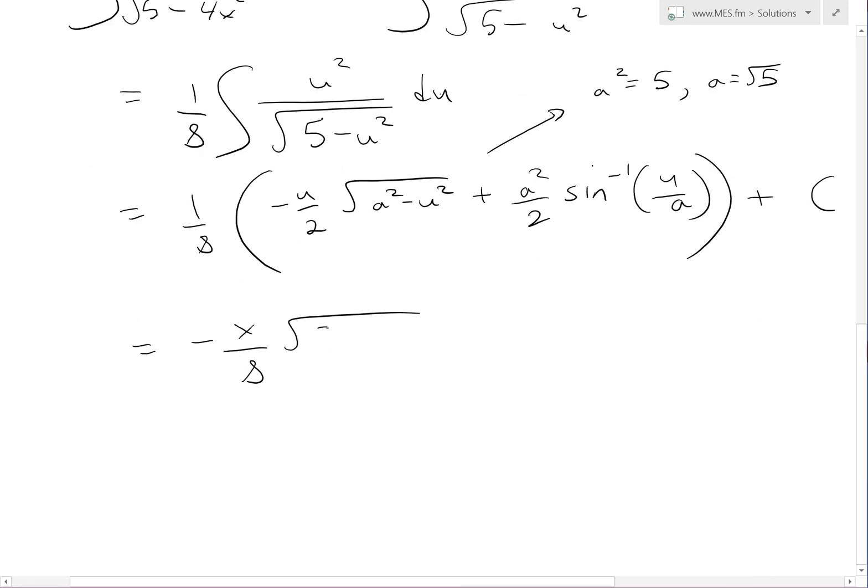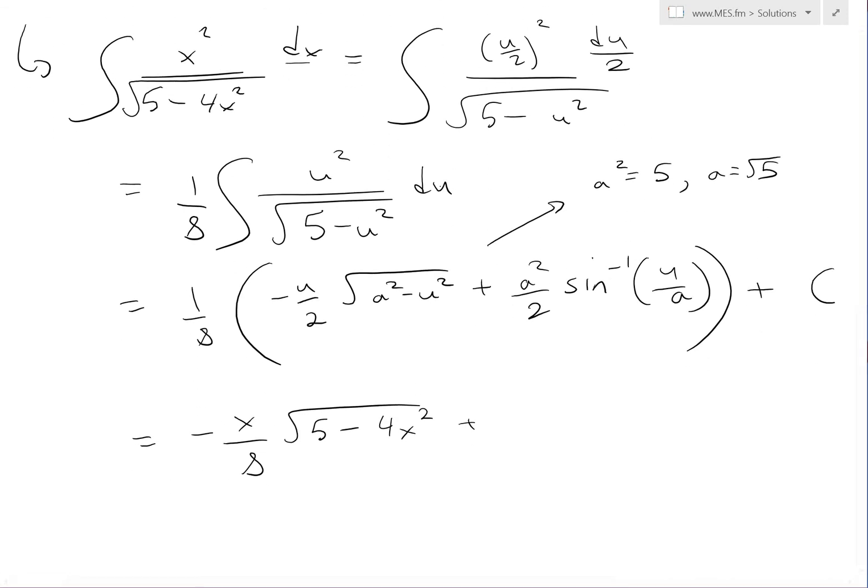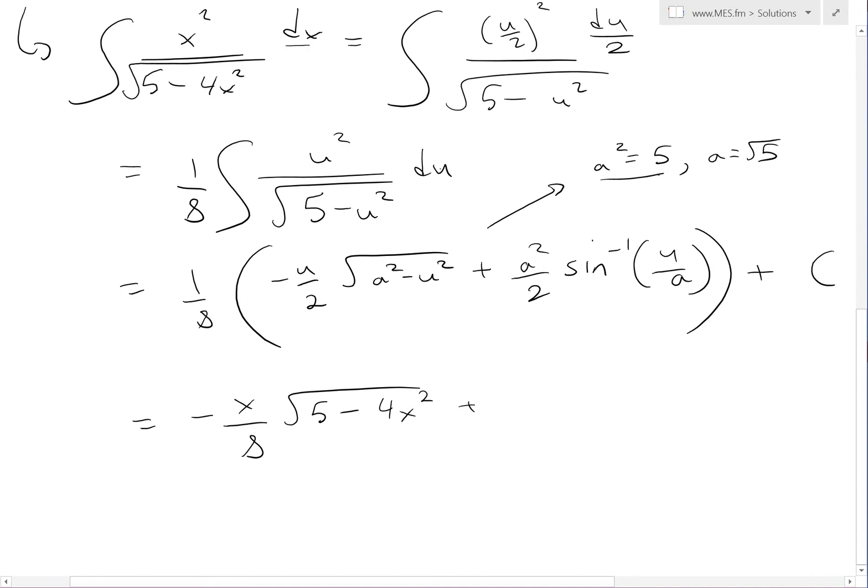So a squared, that's just 5, minus u, which is 2x squared, so we get back to our 4x squared. And then plus here, a squared which is just 5. So we have 5 over 2 times 8, multiply this out.